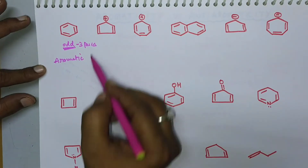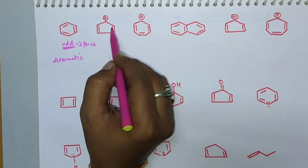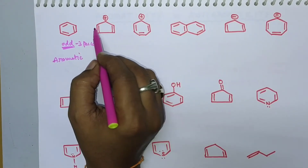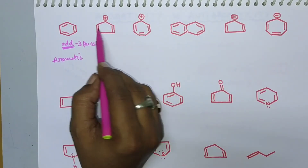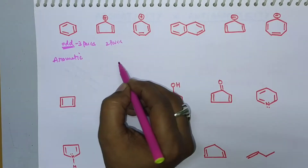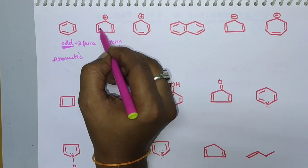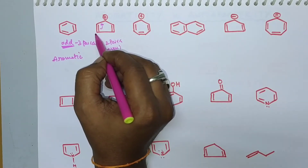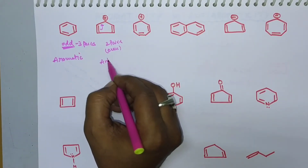Consider the cyclopentadienyl cation. It consists of two π bonds, meaning two pairs of electrons — that is an even number of electron pairs. It also involves in resonance with the positive charge shifting around the ring. Therefore, cyclopentadienyl cation is anti-aromatic.